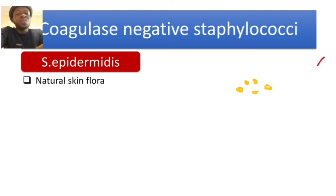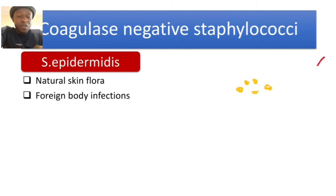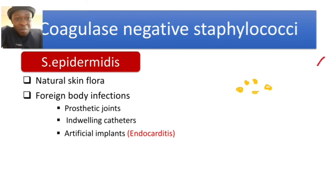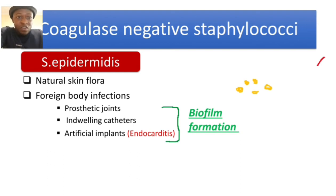Starting with Staphylococcus epidermidis — this bacteria is part of the natural skin flora and is mainly known for foreign body infections, for example prosthetic joints, indwelling catheters, and artificial implants. For example, if we talk about prosthetic heart valves, it can lead to endocarditis. This bacteria is able to cause all these conditions because it is able to produce biofilm, which enables adherence to these foreign bodies.